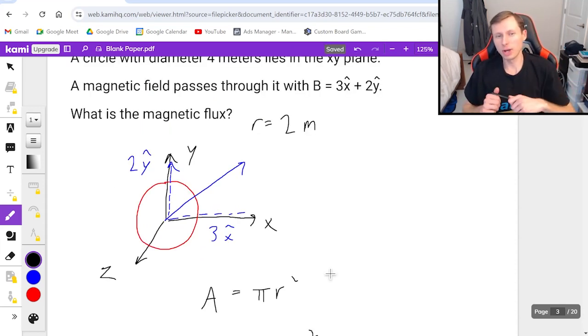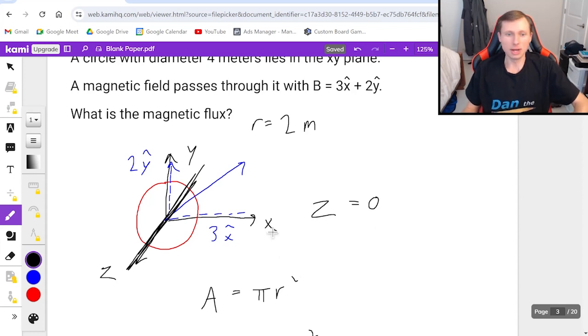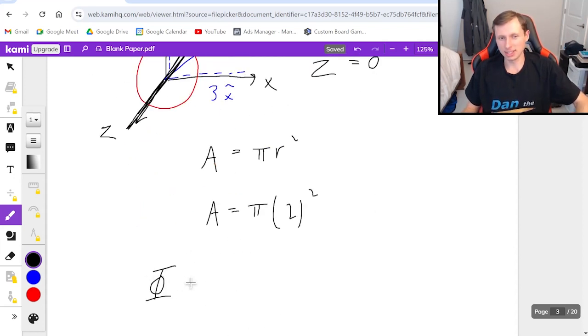Now the real question, which component do I want? The x component or the y component? I'll give you a second to think about it. You can pause the video. And the correct answer is neither. I want the z component because that's the only component that's actually going through my circle. And since the z component is zero, that means the flux automatically is zero.